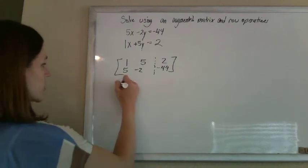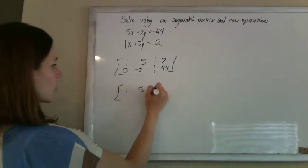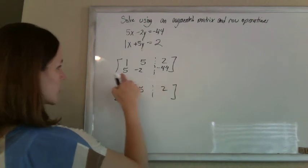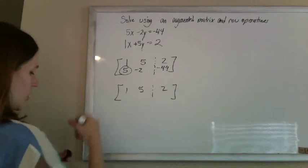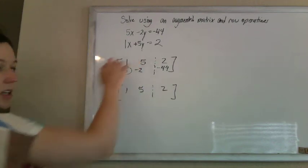So now what we're going to do is we're going to use that first row to get zeros in the first column. So we're aiming for that zero first, and we're going to use the first column to get it.